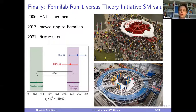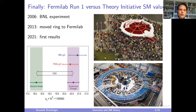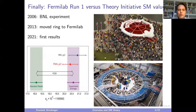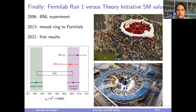The results we discuss today are from the run taken in 2017 — run one. In the meantime runs two, three, four have occurred, and run five is ongoing. So in the next few years the experimental situation will further improve. Currently there is a 4.2 sigma discrepancy; in absolute terms the deviation is at the level of 2.5 × 10^-9.